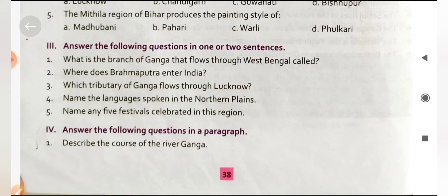Write a note on the major occupations of the people of the Northern Plains. Agriculture and industry are the two important occupations here. Farmers grow rice, wheat, pulses, sugarcane, fruits and vegetables. Punjab is the largest producer of wheat in India. Major industries include sugar, automobile parts, textiles, and heavy machinery. Animal husbandry and dairy farming are also important activities.